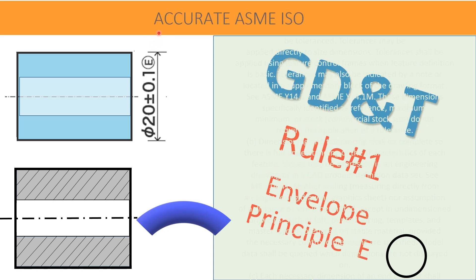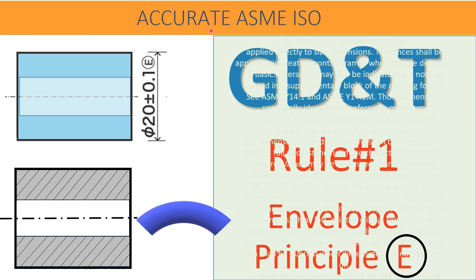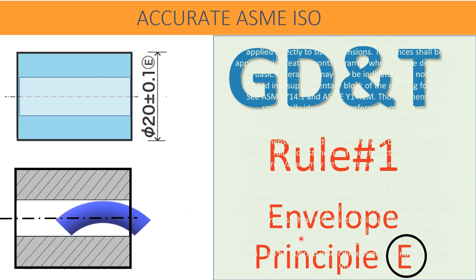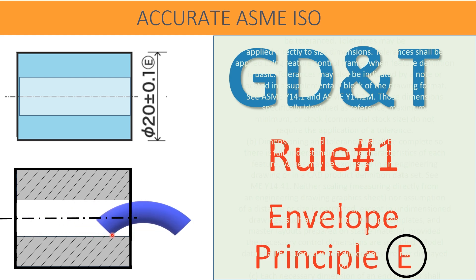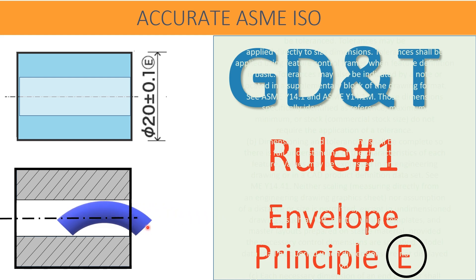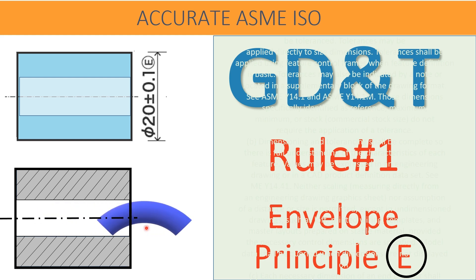Hello friends, welcome to our YouTube Learning Channel Accurate ASME ISO. There is a very important rule in the standard called Rule 1, or the Principle of Envelope Rule. Sometimes it is called the Rule of Perfect Form at MMC size. Understanding of perfect form at MMC is very important, and here we learn step by step the practical meaning of perfect boundary at maximum material condition.